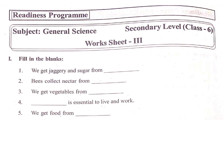We get jaggery and sugar from sugarcane. Bees collect nectar from flowers. We get vegetables from plants.